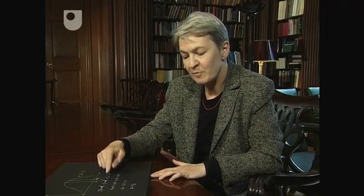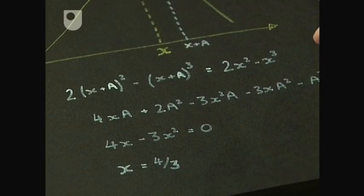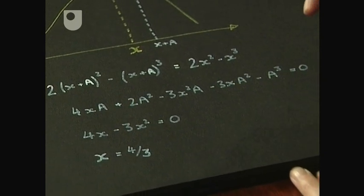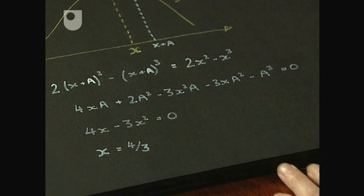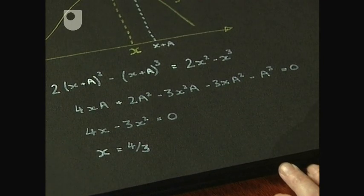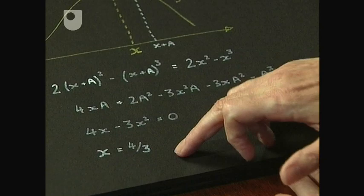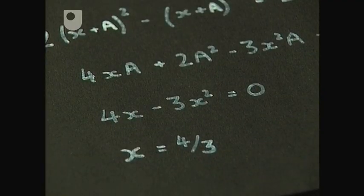Fermat is putting the two expressions equal to each other. We have this equation here. Then Fermat is doing some manipulation and at some point he is neglecting all the terms in a, because a is infinitely small. And so he gets this equation and the result: you have a maximum if x equals 4 thirds.